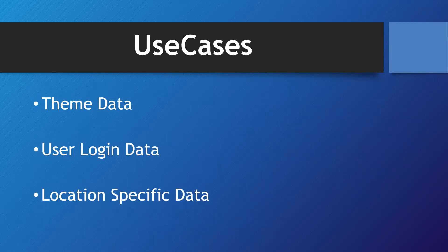We use React Context to share data throughout components — to each and every component very easily. Use cases include theme data: if you want to switch between dark mode and light mode, you need to pass that data to every component in the tree. Also user login data — when a user is logged in, you can show a welcome username in the header. Another use case is location-specific data like language or locale, which should be known to every component throughout the component structure.